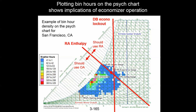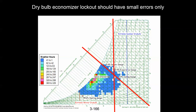Because dry bulb temperature sensors are more reliable, we select an economizer lockout that uses outside air below a specific dry bulb line and return air above it. We'll have some errors — there are cases to the left of the constant dry bulb line but above the constant enthalpy line — but this is the compromise of using wet-bulb-based conditions to select a dry-bulb-based economizer lockout.